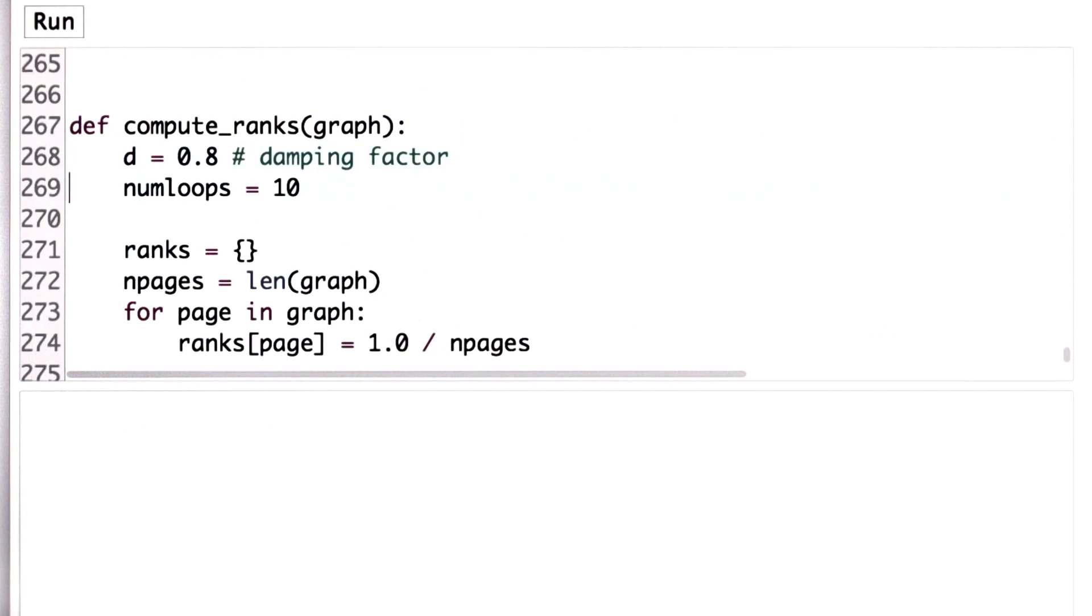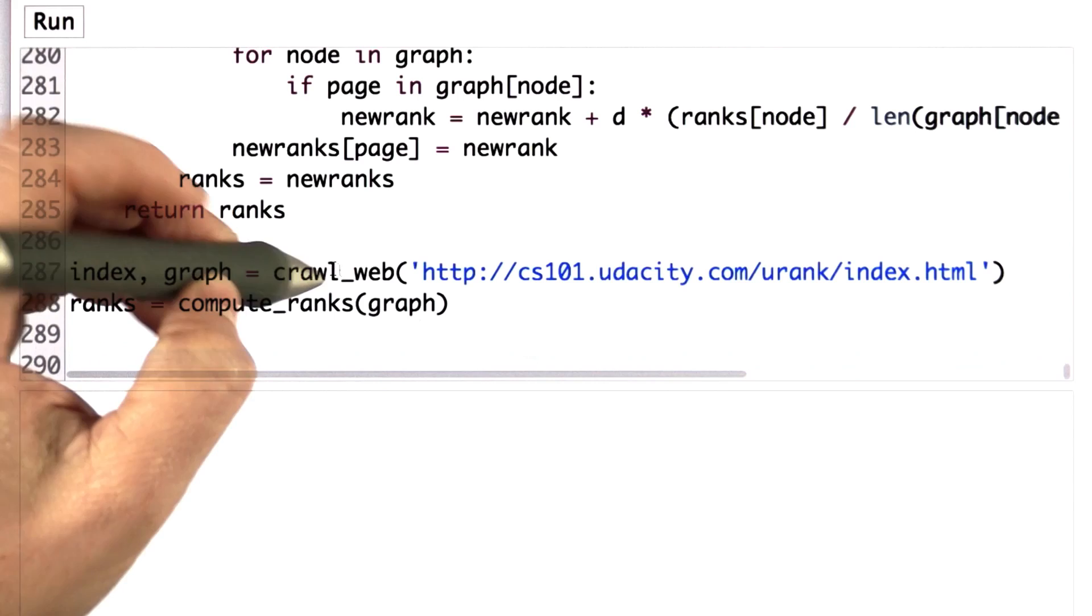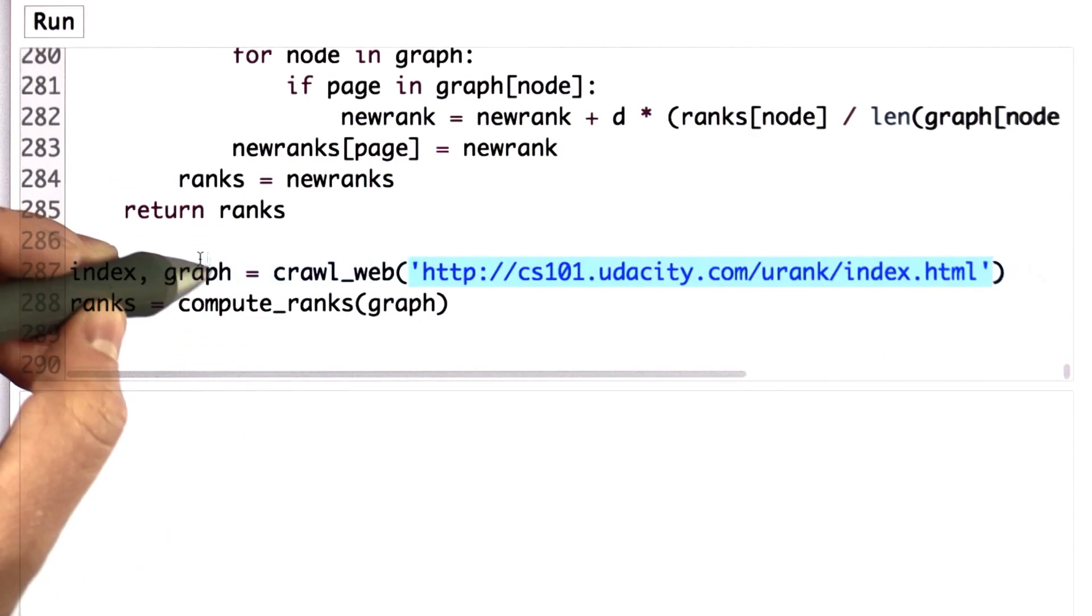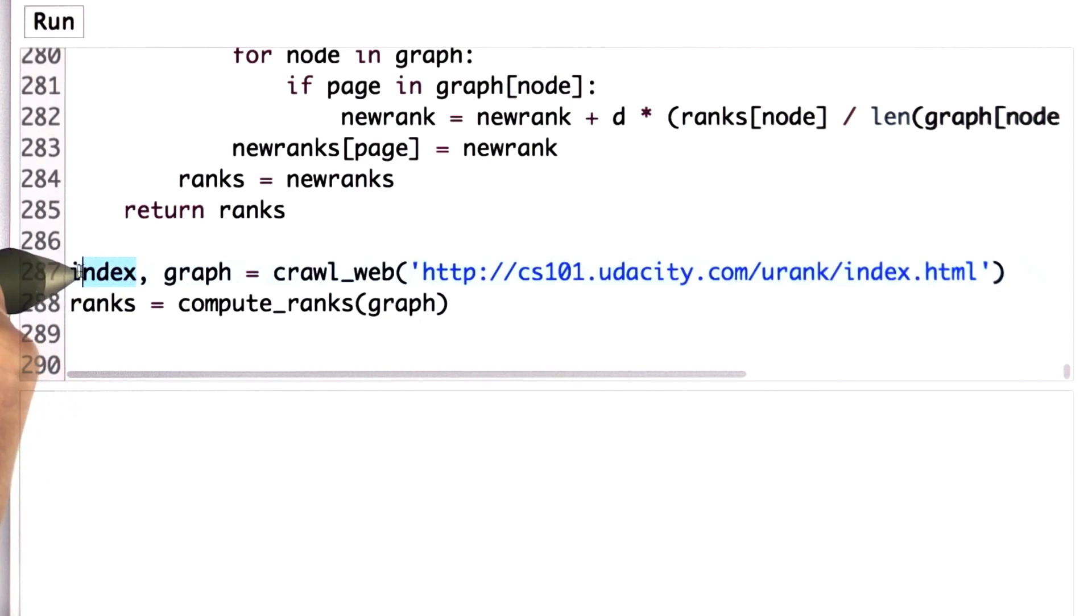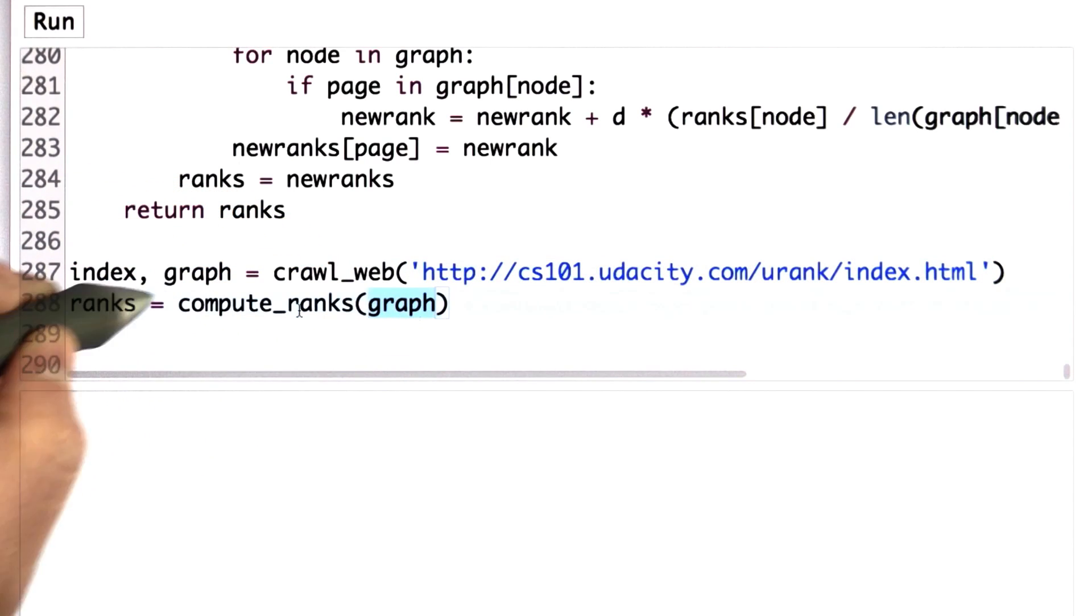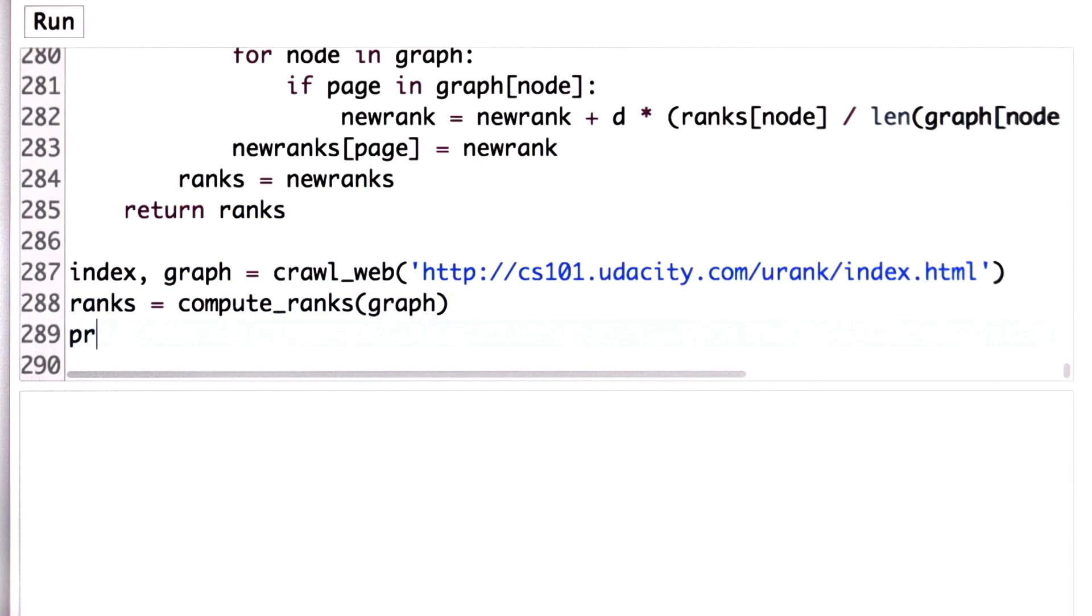So let's try that in the Python interpreter. We have the code that we just wrote for compute ranks. We're going to use crawl web, passing in the example site, assigning the outputs to the variable index, which is the index and graph. And then we're passing in graph to compute ranks, storing the result in the variable ranks.